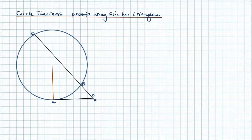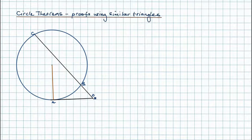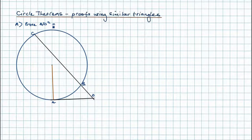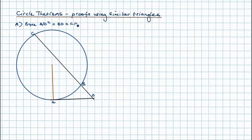The tangent-secant theorem says that the square on the tangent — so AD squared — is equal to the outside segment of the secant, BD, times the whole of the secant, CD. So we want to prove that AD squared equals BD times CD.